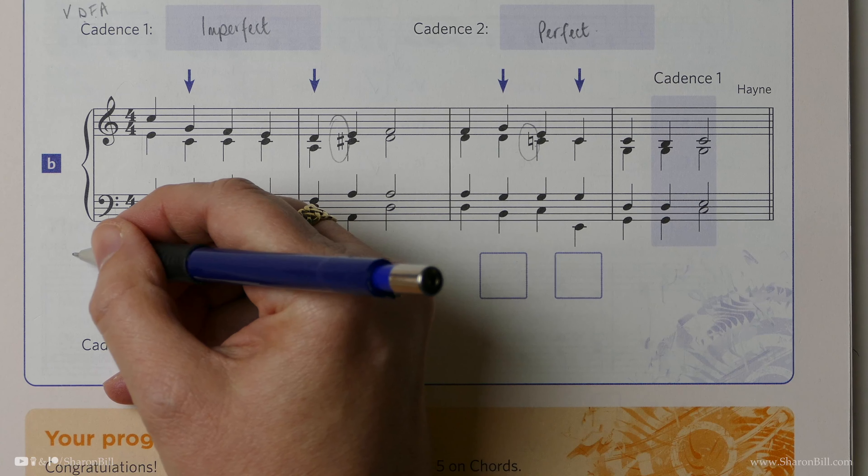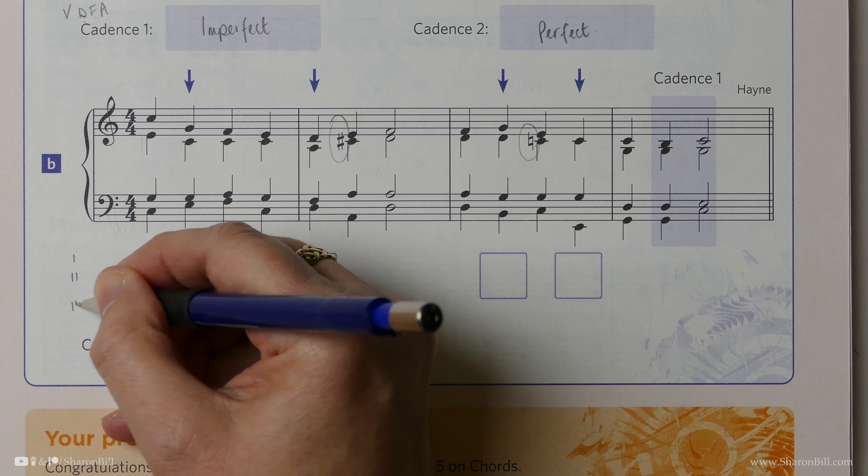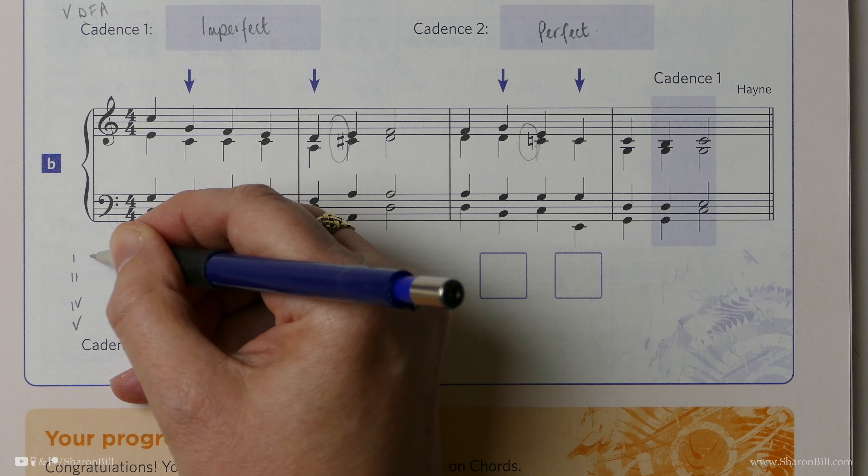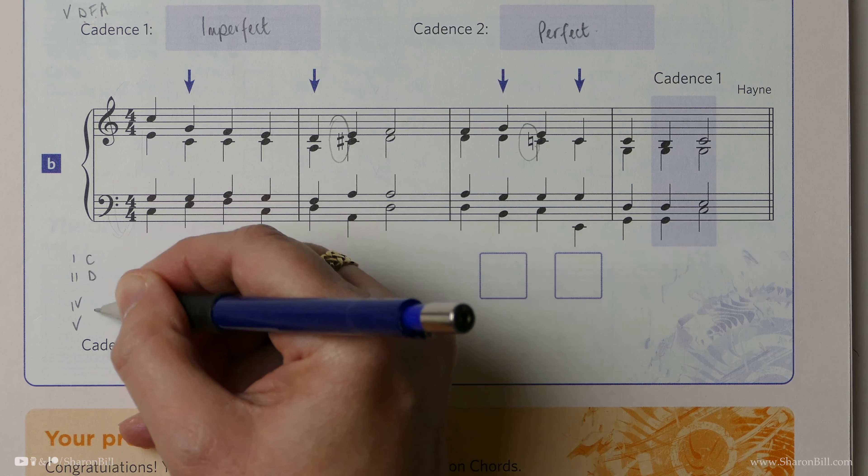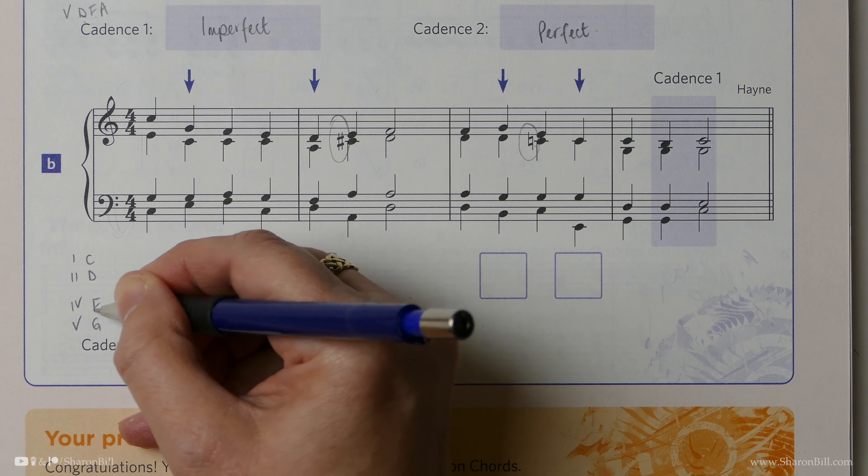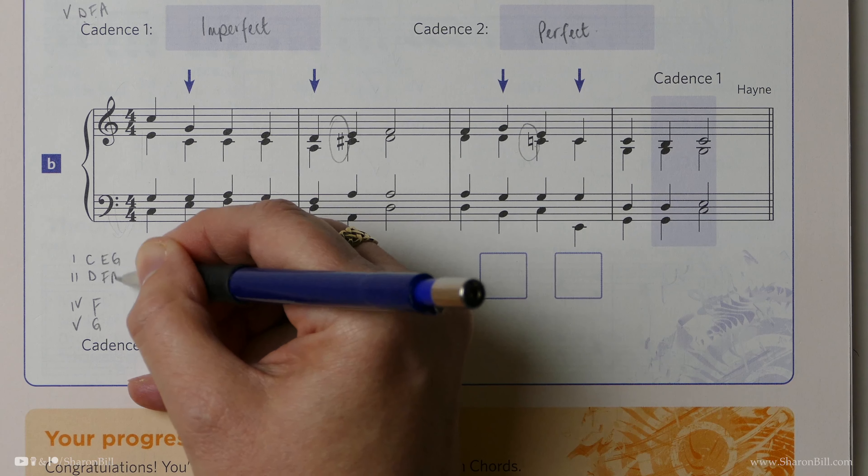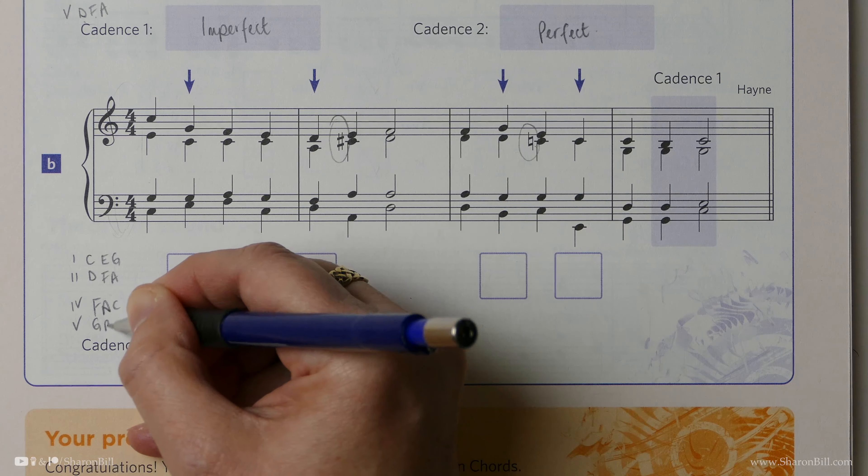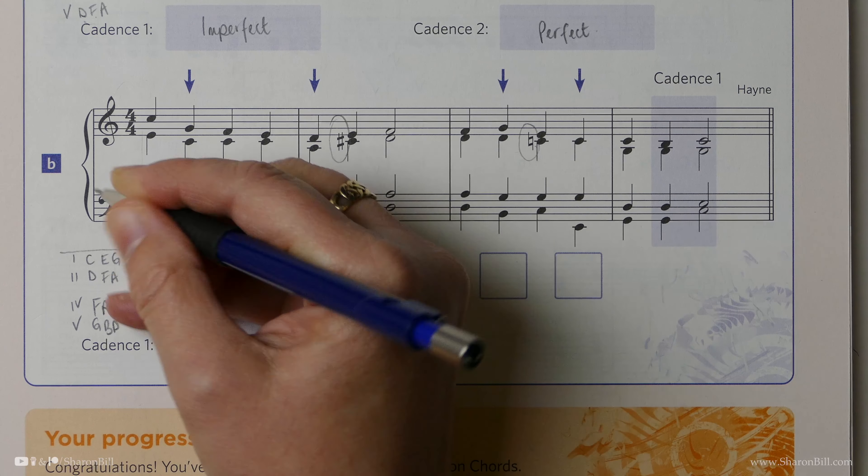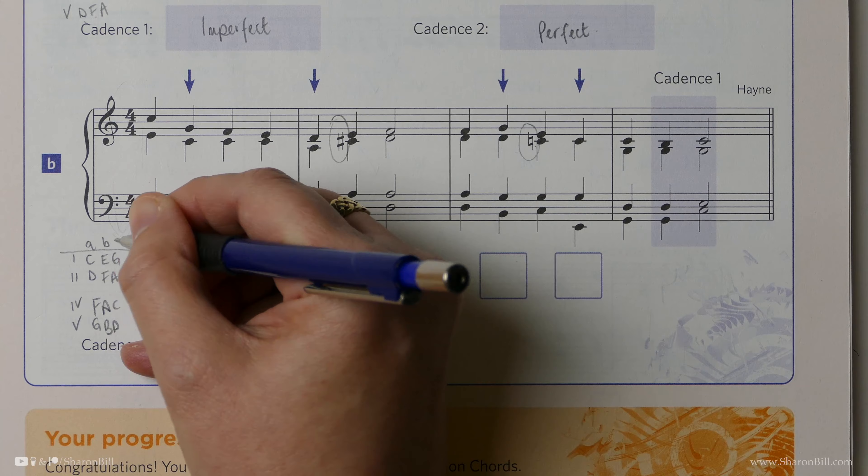So we're in C major. So chords 1, 2, 4 and 5, C, D, F, G. Build our triad, C, E, G, D, F, A, F, A, C, G, B, D. And then we're ready to go A, B, C.